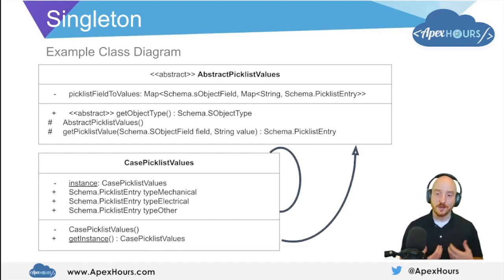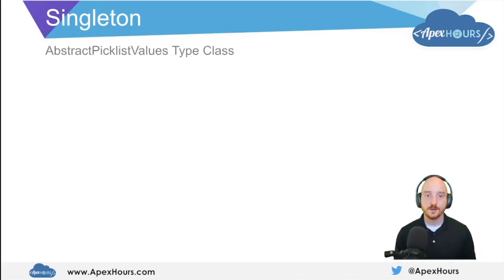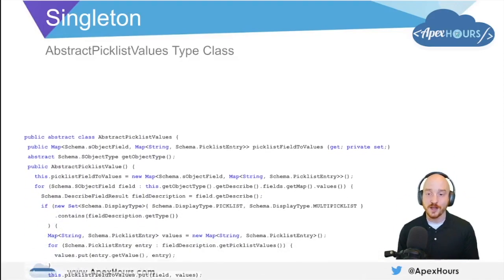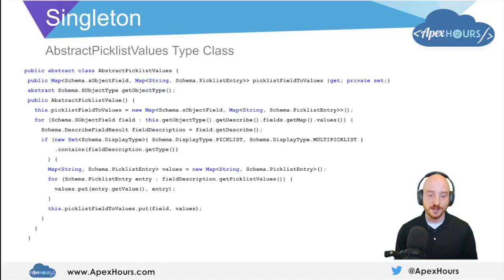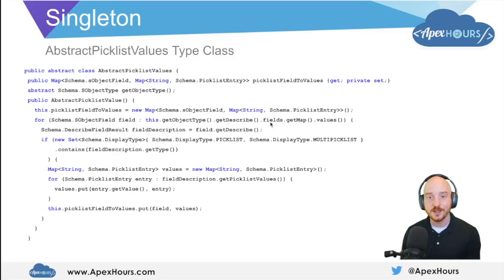We want to do this because it can be computationally expensive to make all of these 'getDescribe' calls on the object and on all of its fields to construct the necessary information to hold all of the picklist entries. By using the singleton pattern we can make sure that if somebody ever needs CasePicklistValues, we only ever perform that computationally intensive task of constructing them from 'getDescribeResult' calls once — reducing our memory footprint. So the AbstractPicklistValues class has that 'picklistFieldToValues' map and the abstract method for 'getObjectType'. The constructor uses 'getObjectType' to get all of the fields and populates that map during construction.